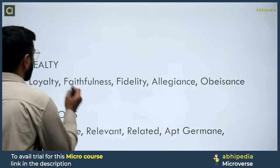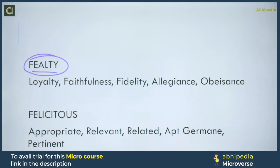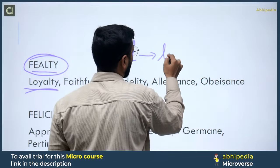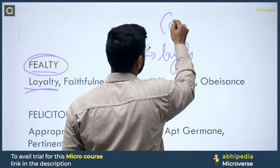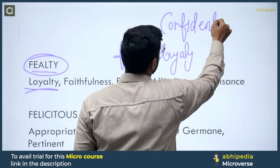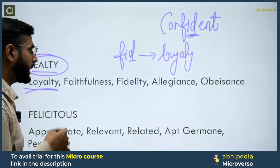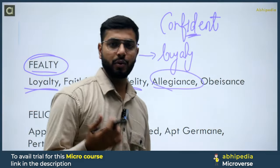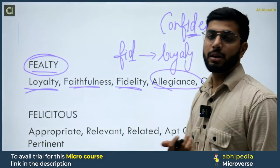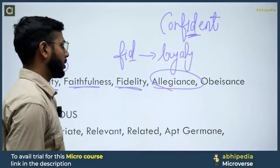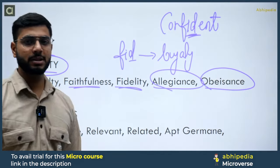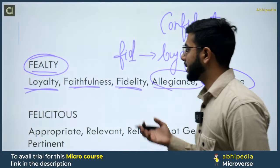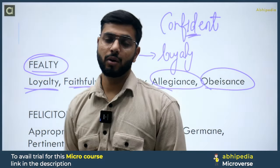The next word is Fidelity. Fidelity का मतलब होता है Loyalty — faithfulness. Think of 'confident' — the root 'fid' relates to faith/loyalty. If you have an alliance with someone it means you have faith in them — that is allegiance. Obeisance: if you obey someone, it means you are showing faith and loyalty. So Fidelity = Loyalty, Faithfulness, Allegiance, Confidence, Obeisance.